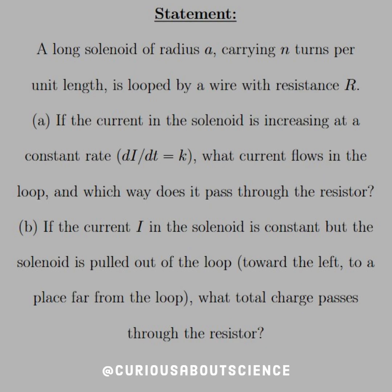Back with some more induction questions. This one's kind of weird, but a good brain teaser. A long solenoid of radius A carrying n turns per unit length is looped by a wire with resistance R, as shown in the diagram. Part A: if the current in the solenoid is increasing at a constant rate, di/dt equal k, what current flows in the loop, and which way — left or right — does it pass through the resistor?